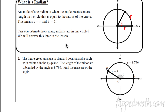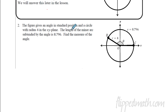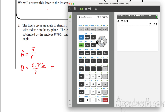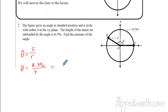We'll let that question sit for now. Using our formula, find the measure of the angle if the arc length is 8.796 and the radius is 4. We write: theta equals arc length divided by radius. So theta equals 8.796 divided by 4. Using a calculator, that gives us 2.199. If units are given — say centimeters — theta is still in radians: 2.199 radians.